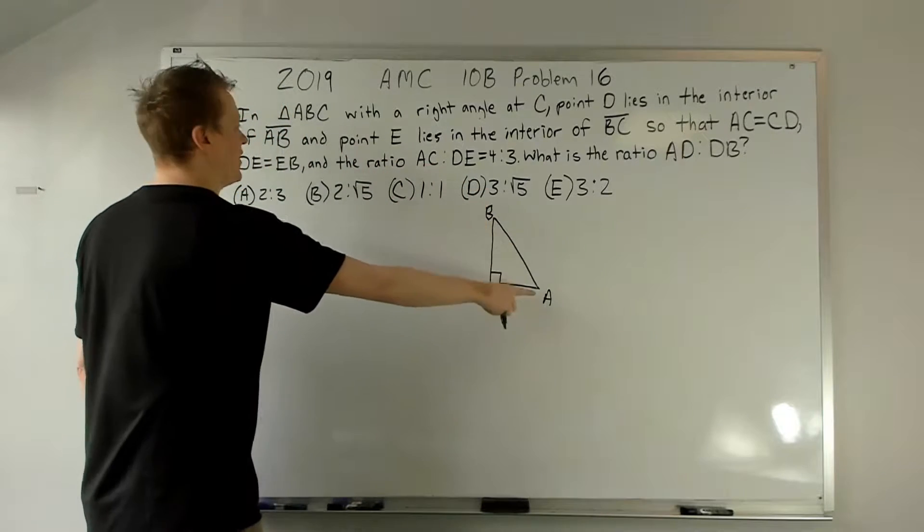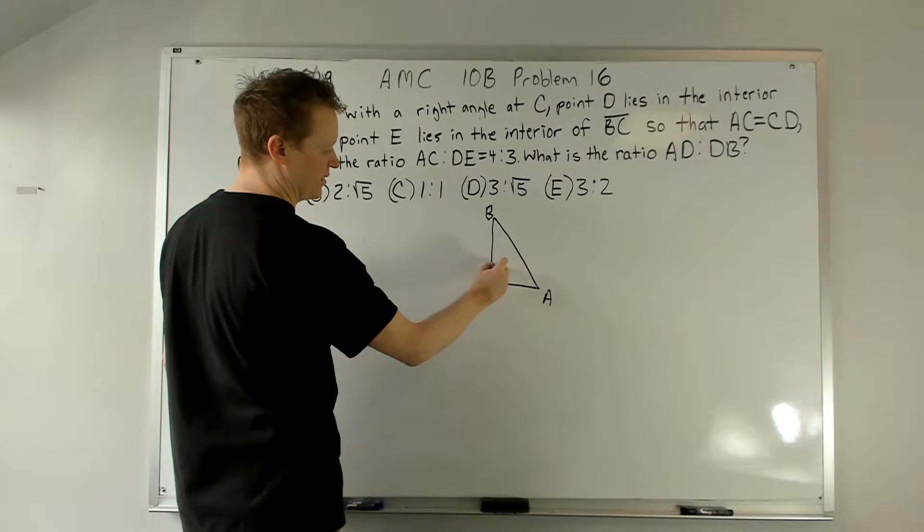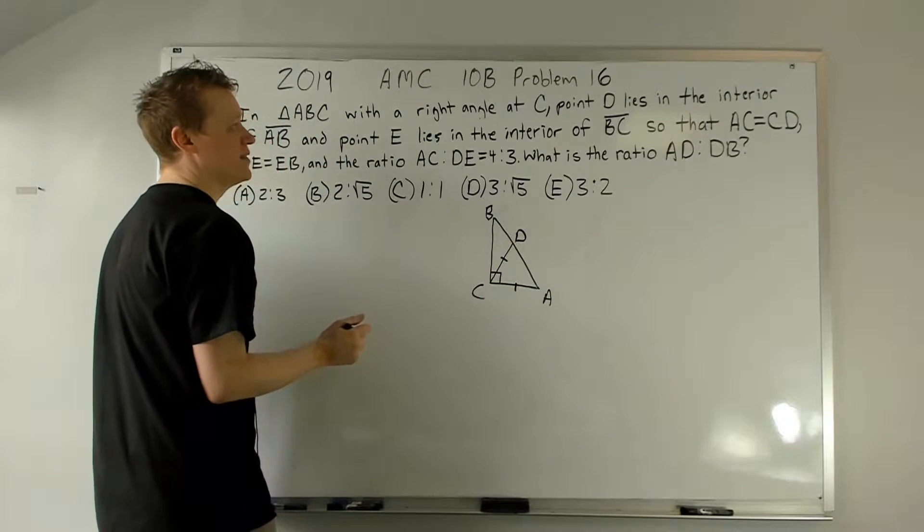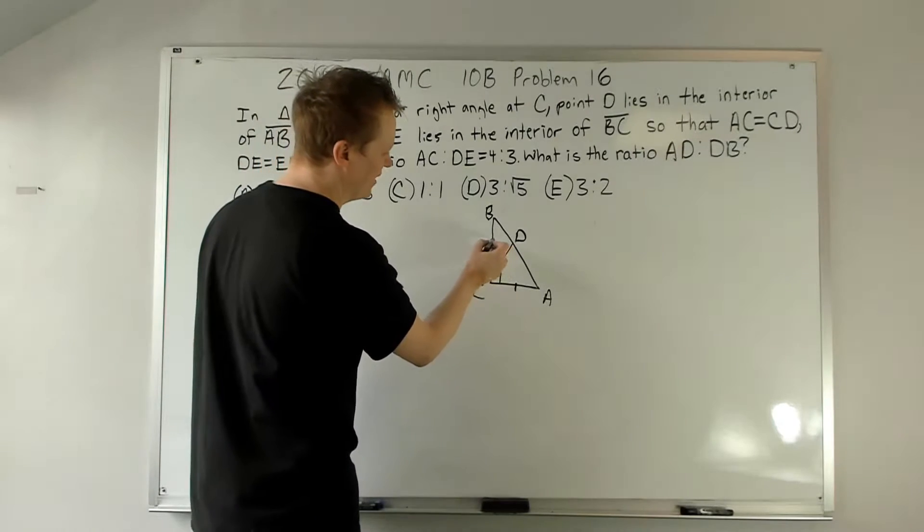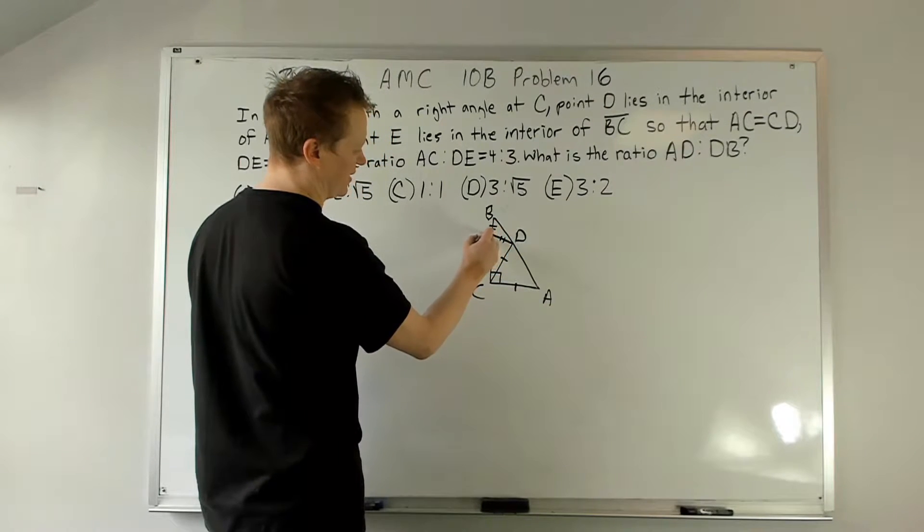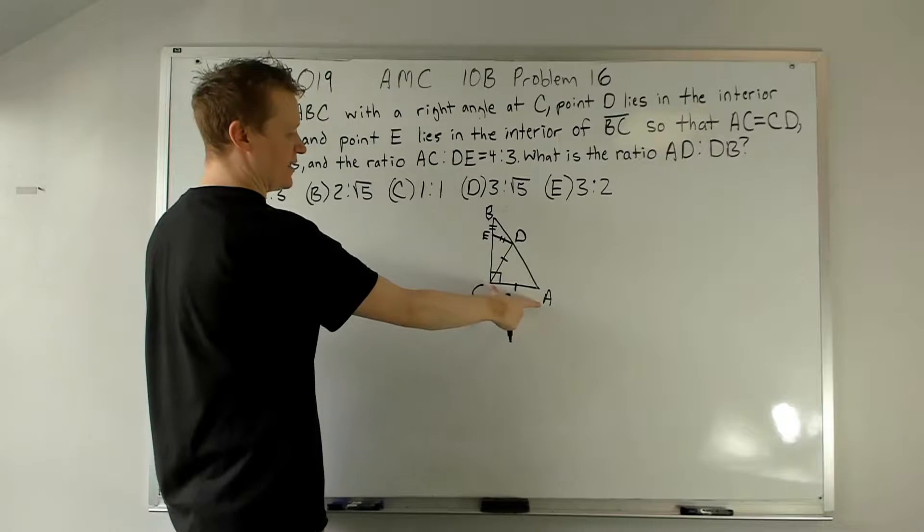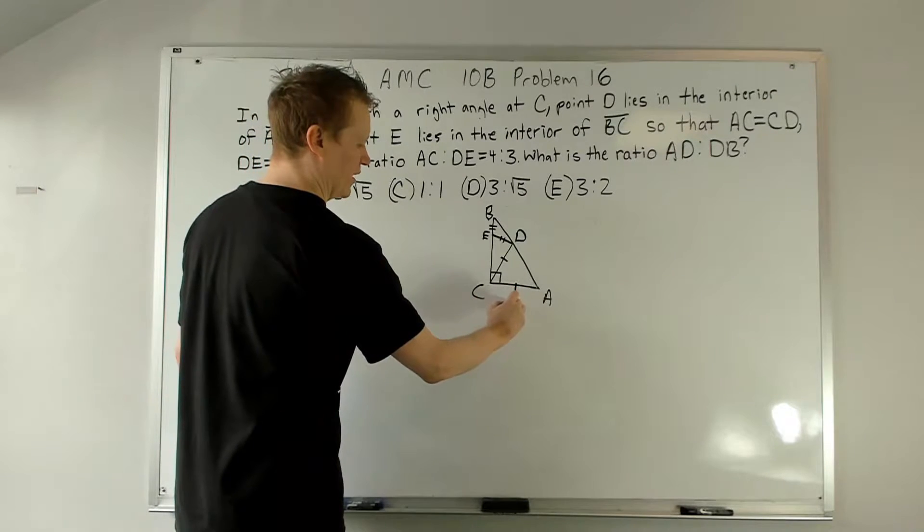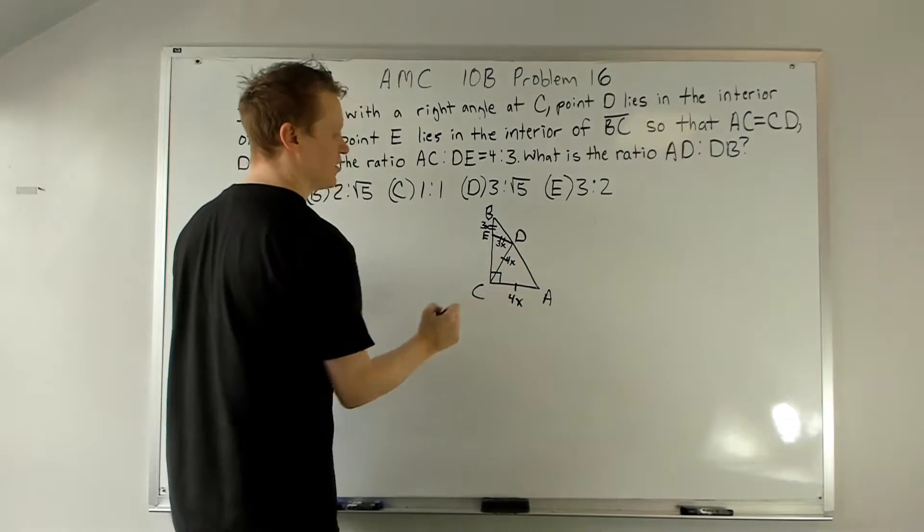Okay, so now we still have AB here and we want AC to equal CD. So I want to fold this way and basically make an isosceles triangle right here between this and this. Next up, E is on BC somewhere over here so that DE equals EB. So we kind of want to make another isosceles triangle about here so that this equals this. The ratio of AC to DE is 4 to 3. We're going to go ahead and make that 4x and this 3x, which means this is also 3x and this is also 4x.